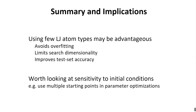To summarize: from this preliminary study, it looks as though using surprisingly few atom types may be advantageous — we get competitive test set accuracy, avoid overfitting, and limit search dimensionality. Even for quite few parameters, such as H2CO3N with around 14 parameters, there is danger of getting caught in local optima. This suggests that in future optimization work, it may be worth using multiple starting points or considering other ways to improve the global search.